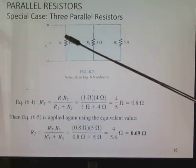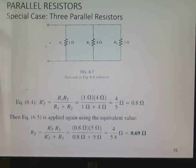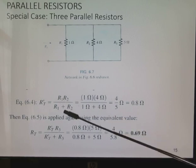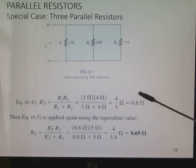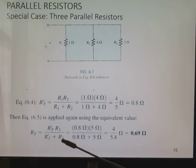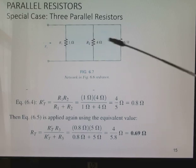Let's use that formula in this example. We have three resistors in parallel. 1 ohm, 4 ohm, and 5 ohm. The total resistance, I'm using this formula, R1 times R2 over R1 plus R2. I get 0.8 ohms for these two in parallel. Then I use this R prime as a temporary result for these two times R3 over RT prime plus R3. And I get 0.69 ohms. Notice again, this value is less than any one of these resistors.